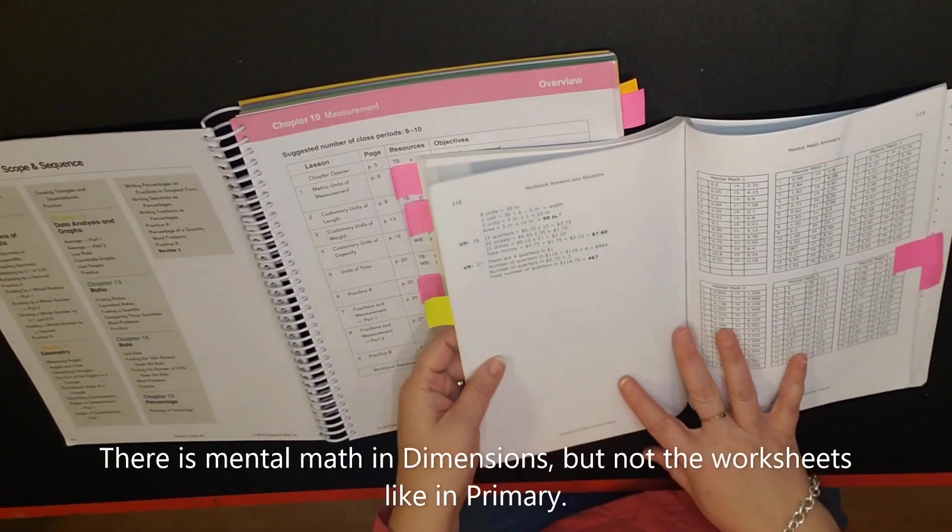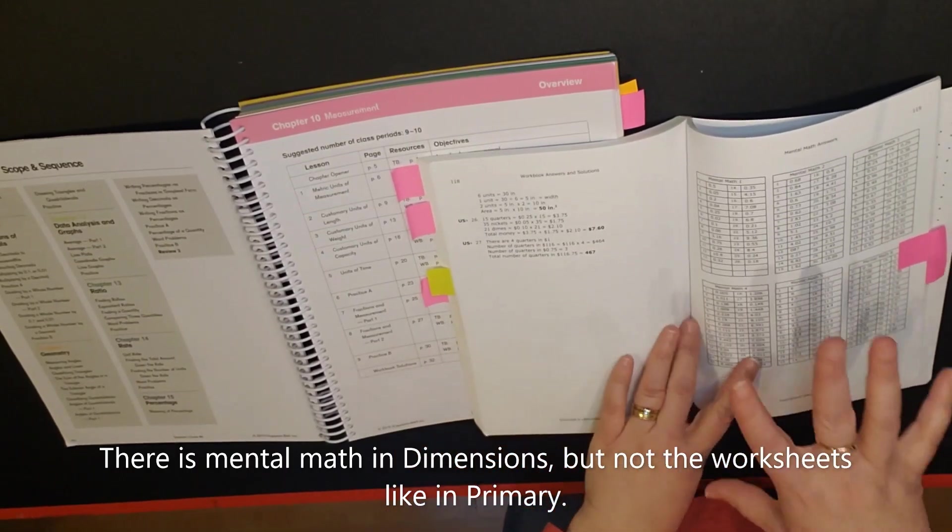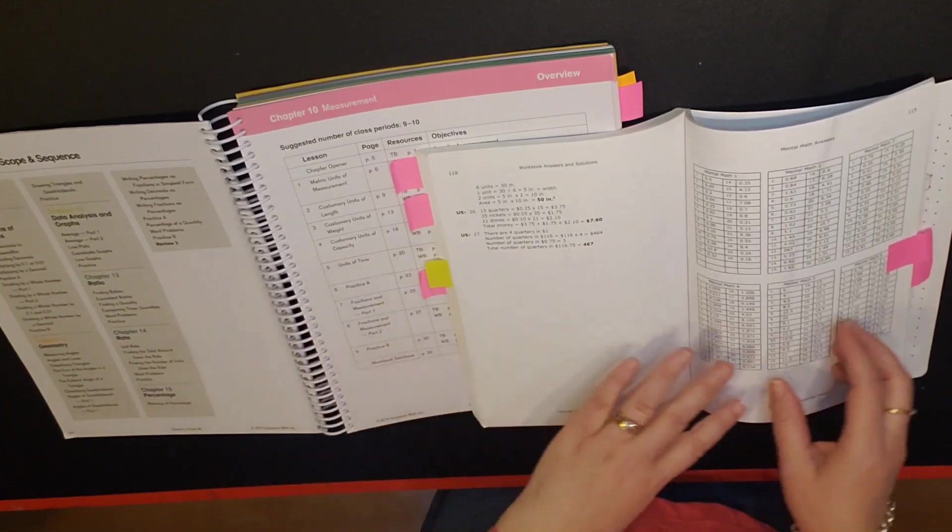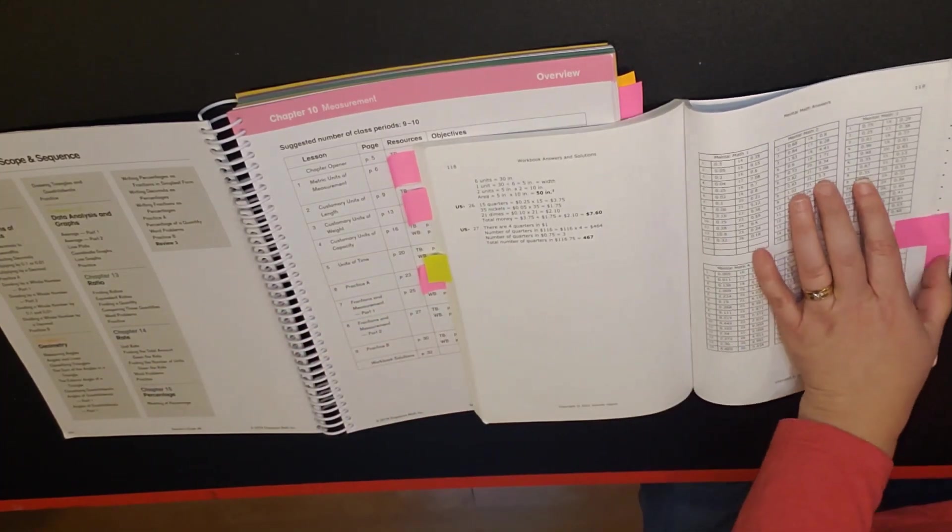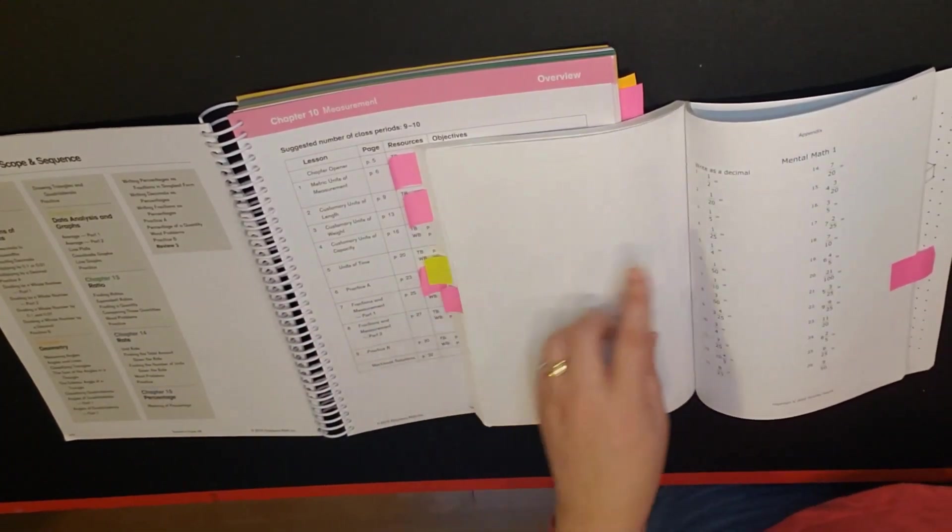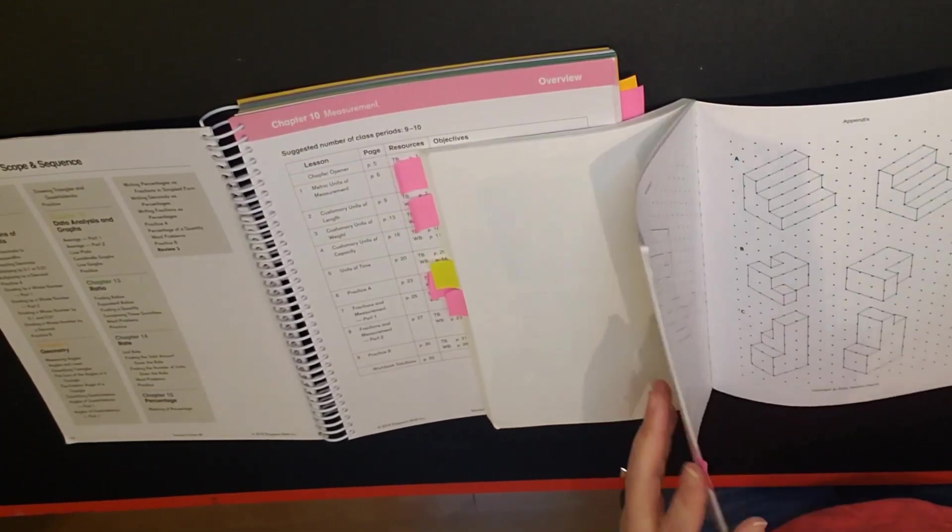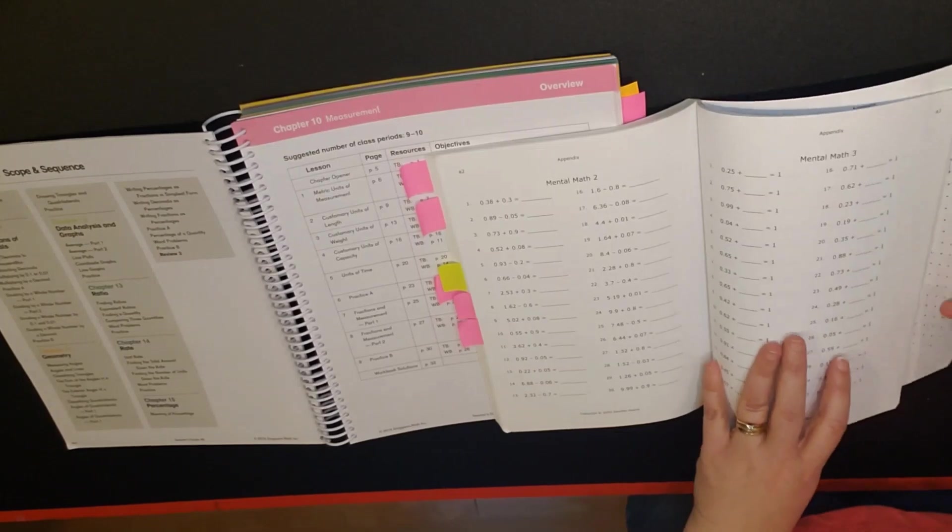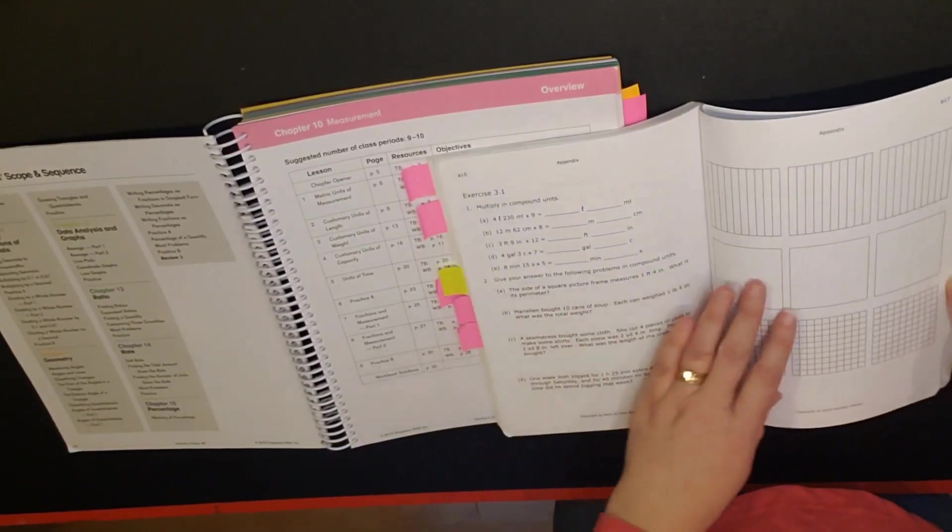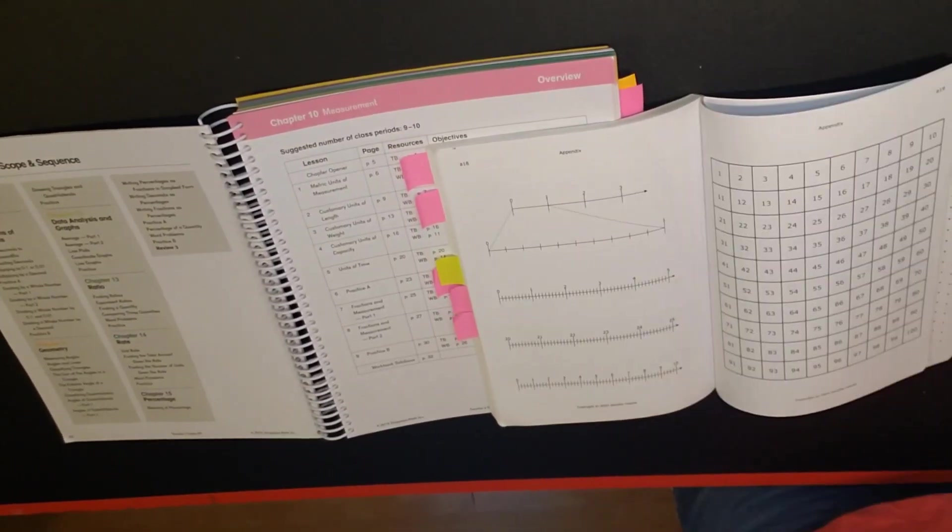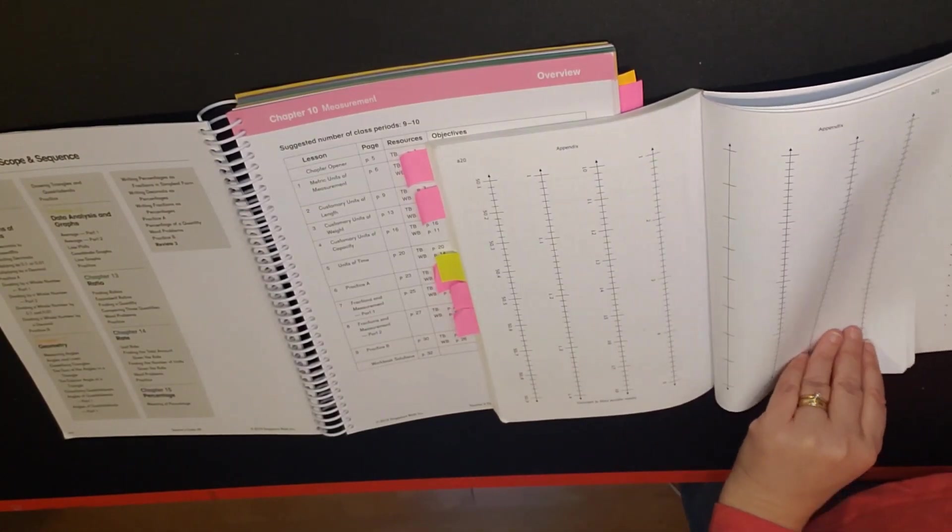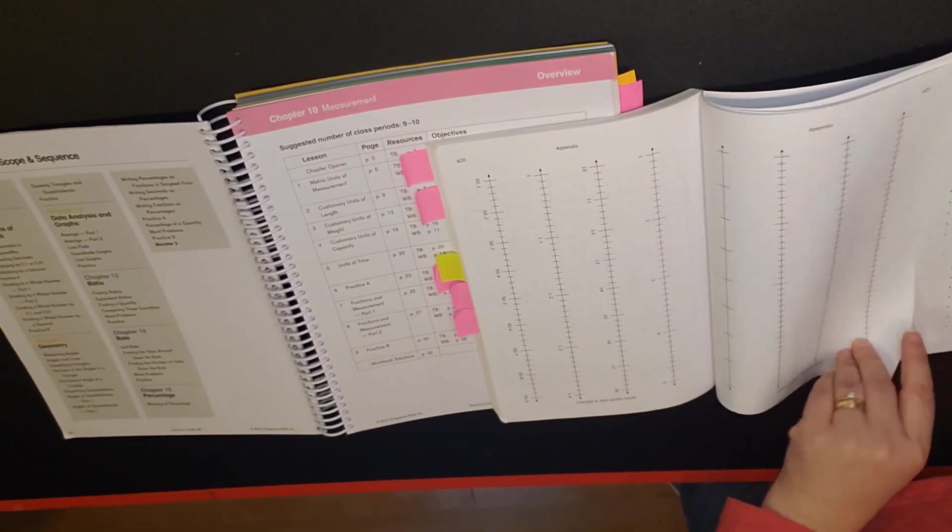Next, mental math. Mental math is included in primary, it is not included to this extent whatsoever in dimensions. In the primary teachers manual you have mental math answers, you have mental math questions. You also have this appendix. Within dimensions they are called black line masters and so you can go online and do a download for free.